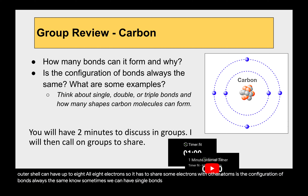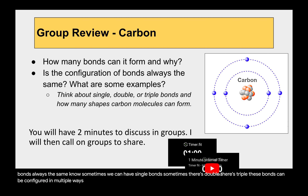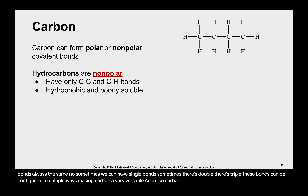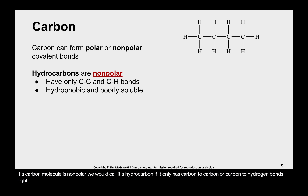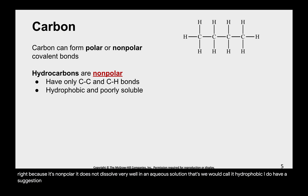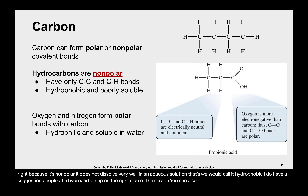Sometimes we can have single bonds, sometimes double, sometimes triple — these bonds can be configured in multiple ways, making carbon a very versatile atom. Carbon can form polar or nonpolar covalent bonds. If a carbon molecule is nonpolar, we call it a hydrocarbon, meaning it only has carbon-to-carbon or carbon-to-hydrogen bonds.